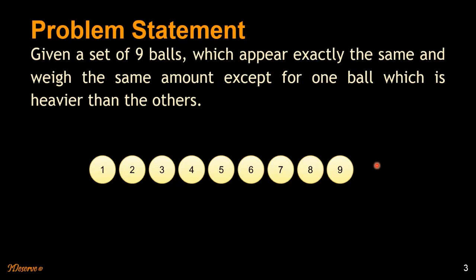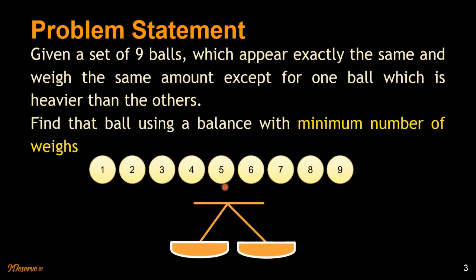In this puzzle we have a set of balls which look similar. One of them is heavier than the other balls. All the balls are supposed to be of the same weight, but one of them is heavier. We want to find out that heavier ball using a balance, but the constraint is to use this balance the minimum number of times.